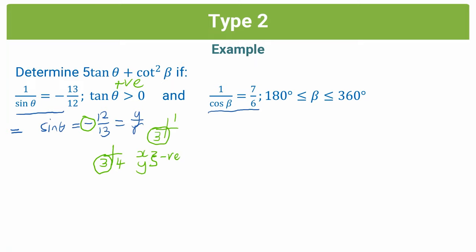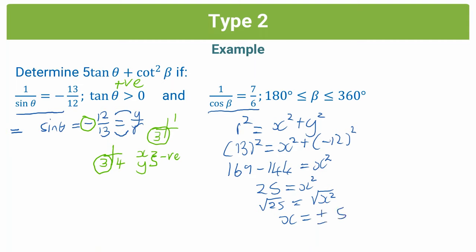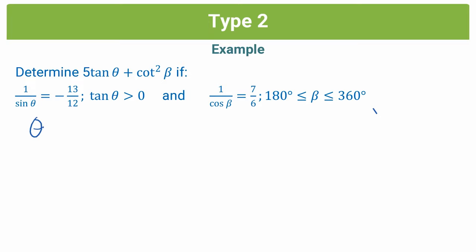Let's use Pythagoras to solve for x, since we have y and r. r squared equals x squared plus y squared. r is positive 13 and y is negative 12, so 13 squared equals x squared plus (negative 12) squared. That gives 169 minus 144 equals x squared, so 25 equals x squared. Square rooting both sides gives x equals plus or minus 5, but we take negative 5 because we're in the third quadrant where x is negative. So for theta: x is negative 5, y is negative 12, and r is positive 13.